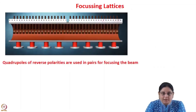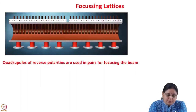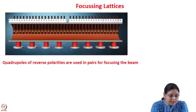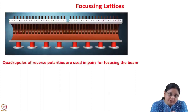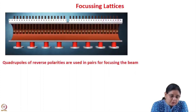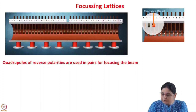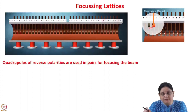Various focusing lattices are used for focusing in a linear accelerator. For example, in a drift tube linac — you can see the picture of a drift tube linac here — these are the drift tubes. In between the drift tubes there is a gap where the RF field is applied, so the beam gets accelerated in the gap. When it enters inside the drift tube, since fields cannot penetrate inside the drift tube, it does not experience any accelerating field.